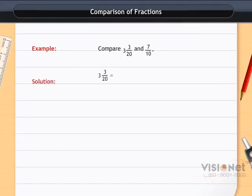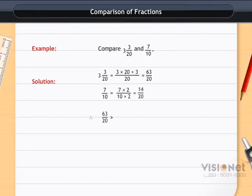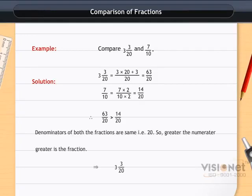Solution as shown in the animation: 63 upon 20 is greater than 14 upon 20, or 3 and 3 by 20 is greater than 7 by 10.